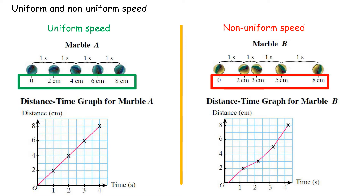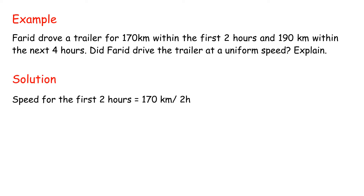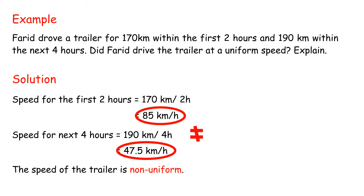The gradient indicates the speed. Example: Farid drove a trailer for 170 kilometers within the first 2 hours, and 190 kilometers within the next 4 hours. Did Farid drive the trailer at a uniform speed? Explain. Solution: Speed for the first 2 hours equals 170 kilometers over 2 hours, equals 85 kilometers per hour. Speed for the next 4 hours equals 190 kilometers over 4 hours, equals 47.5 kilometers per hour. Therefore, the speed of the trailer is non-uniform.